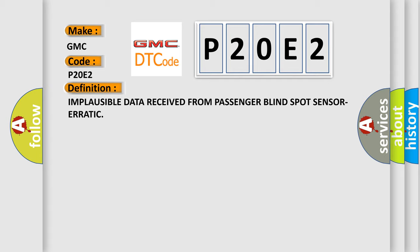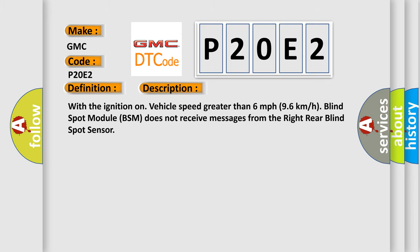And now this is a short description of this DTC code. With the ignition on, vehicle speed greater than 6 miles per hour (96 kilometers per hour), the blind spot module BSM does not receive messages from the right rear blind spot sensor.